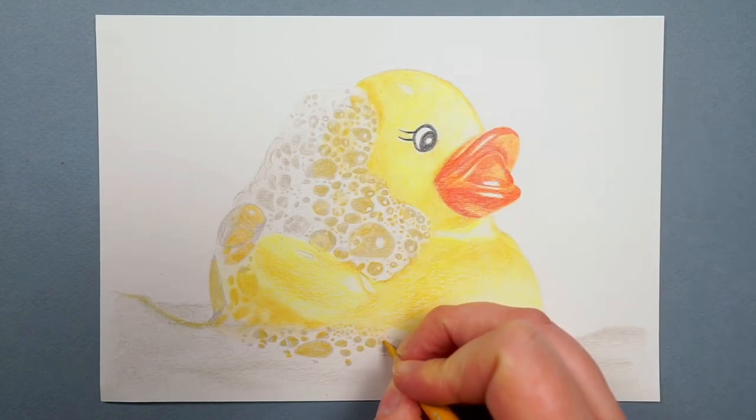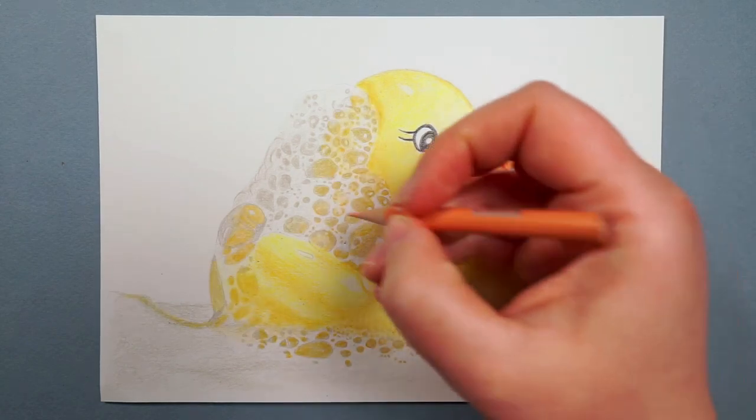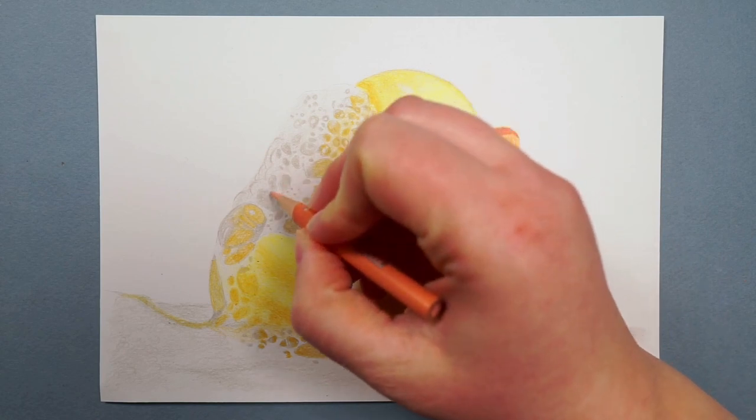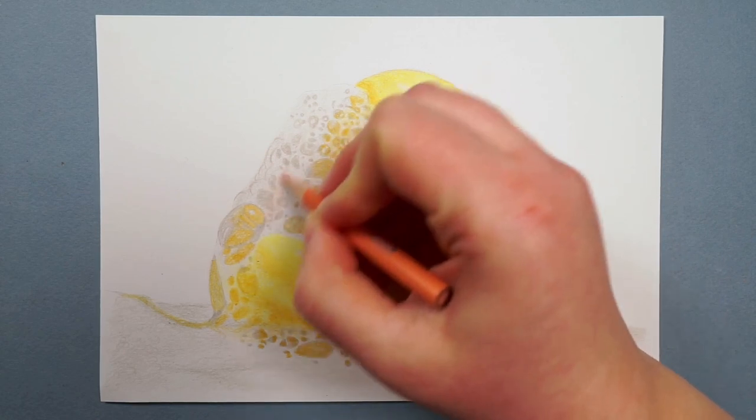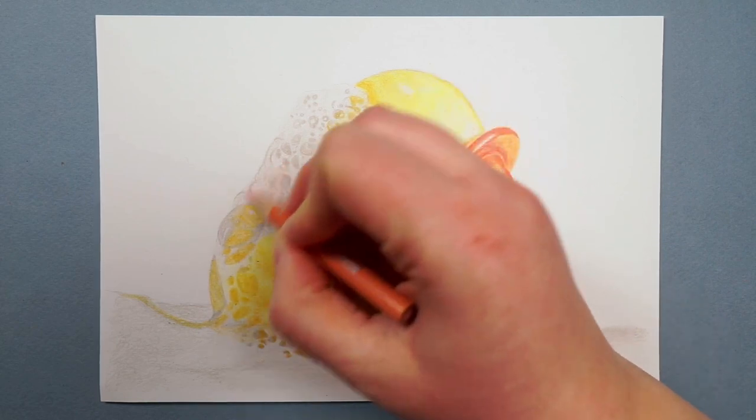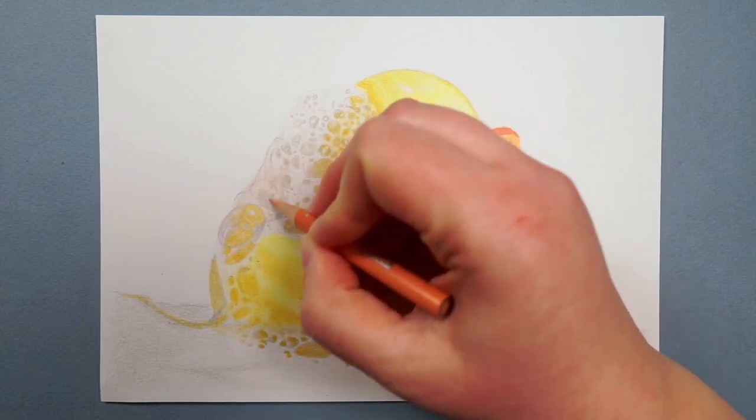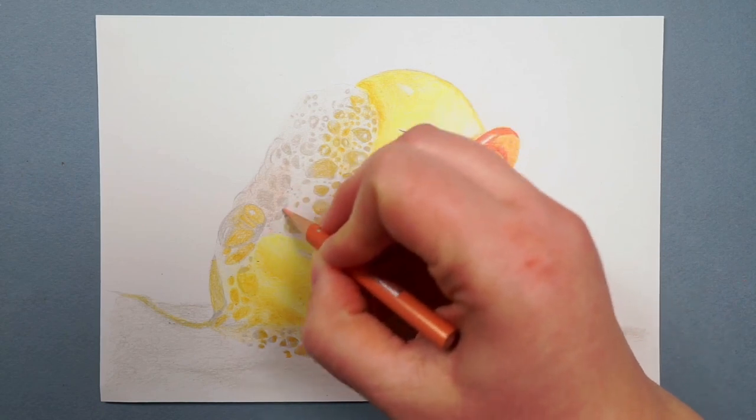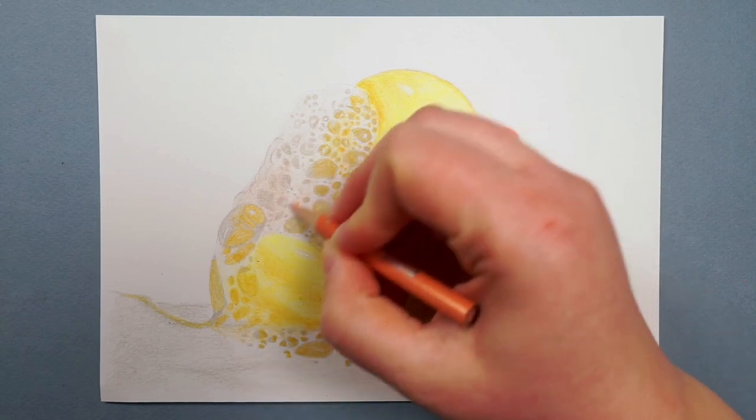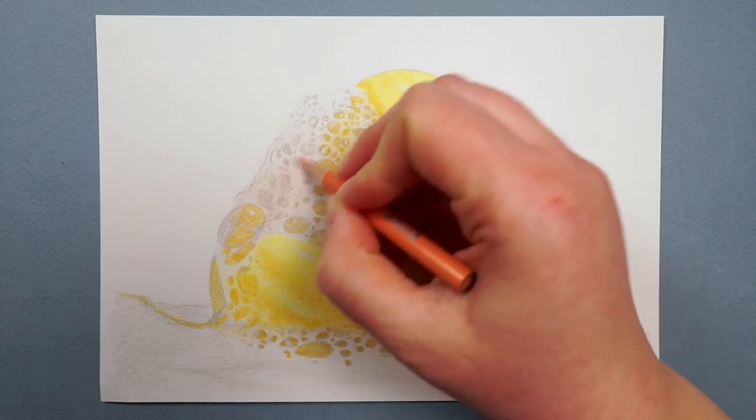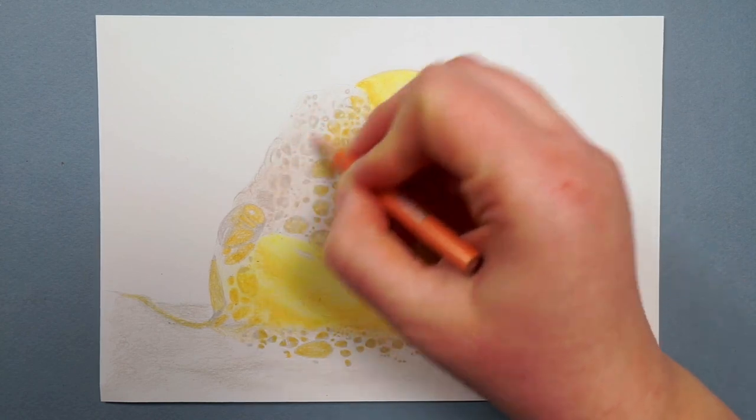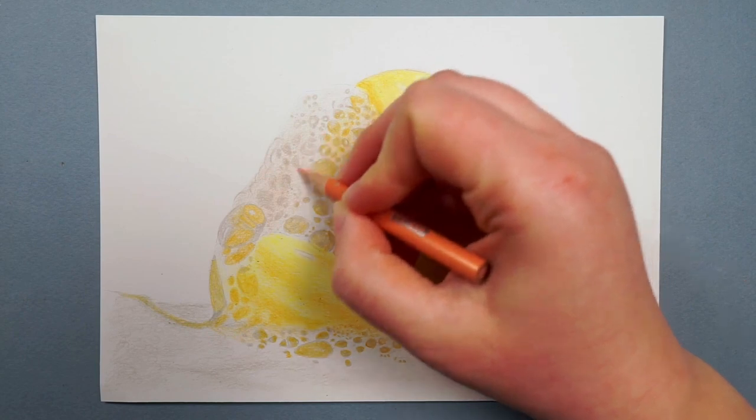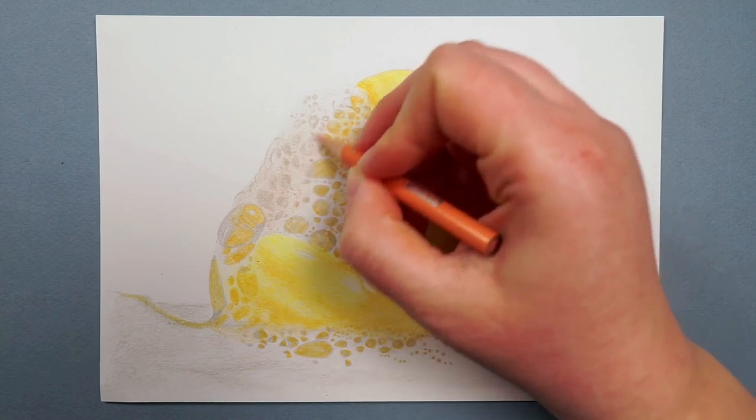And so once I've gone around and marked in all of the yellow bubbles, I then want to start thinking about if I need to maybe slightly adjust the background color. There isn't a huge amount of base color here at the moment, and actually at the moment it's grey, I think it needs to be a little bit more pink. So I can go over all of this with a pink and just begin to change that color a tiny bit. You can see that I'm going over where I've marked in all of the bubbles—it's not taking that away, it's just adjusting and changing the color, but I can still see everything I've marked in.